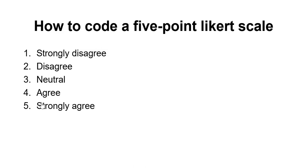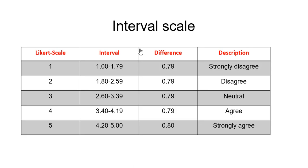We are going to need an interval scale table to interpret the mean. The table has variables from one to five, from strongly disagree to strongly agree. The interval from one to 1.17 means strongly disagree. As you can see, the higher the value, the more the person agrees with the statements.